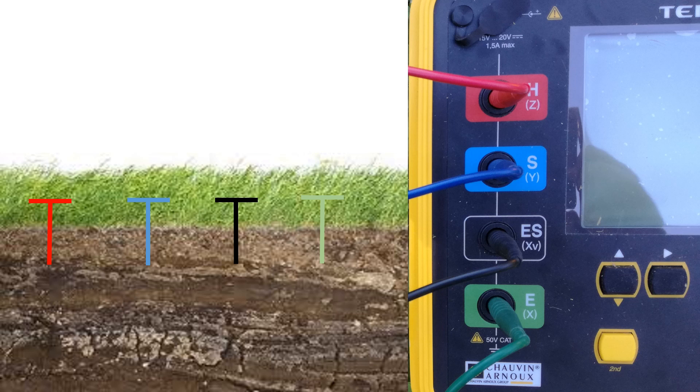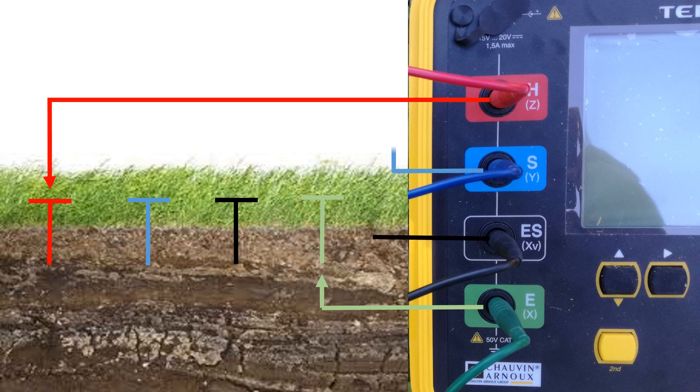We connect the two outer electrodes in the terminals E and H, and the two inner electrodes in the terminals S and ES.